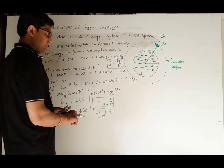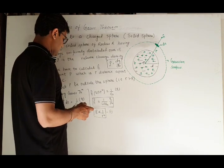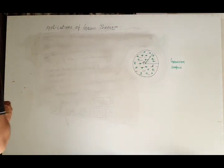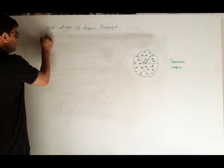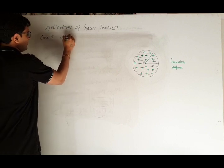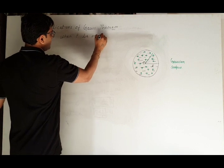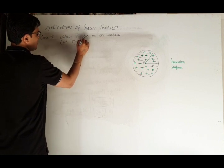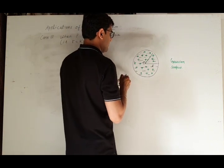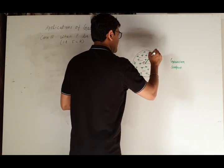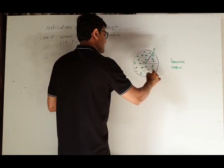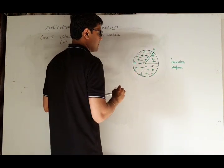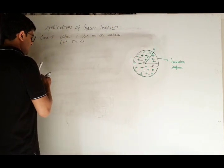Case 2: when P lies on the surface, that is r equals R. In this case, P is on the surface of the sphere, and the Gaussian surface has radius r equal to capital R.